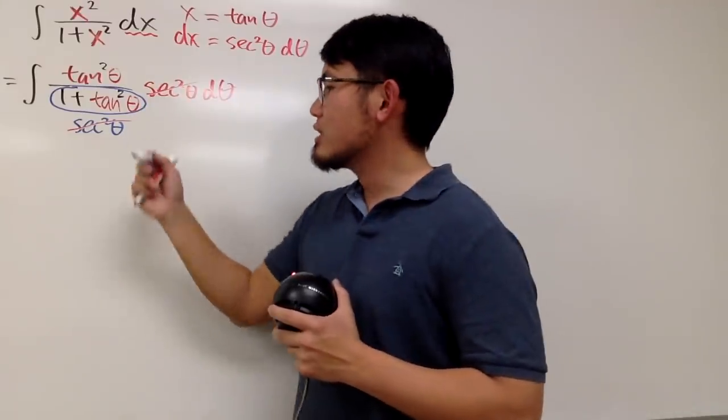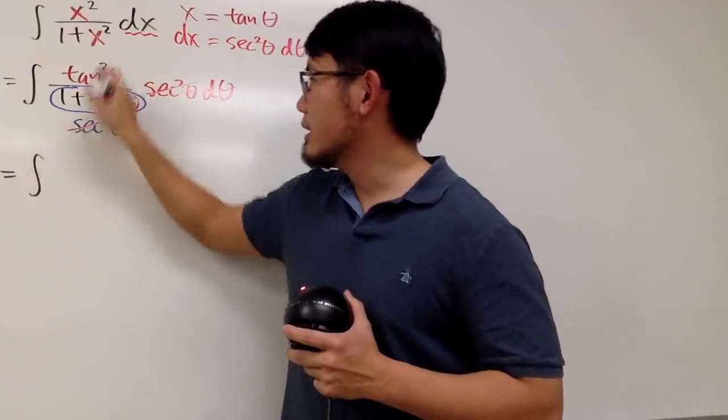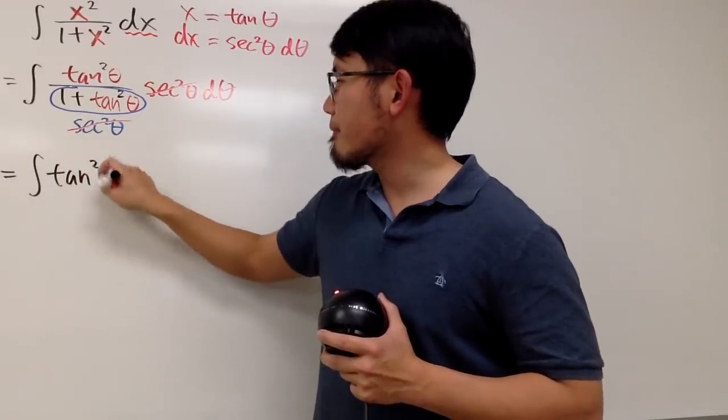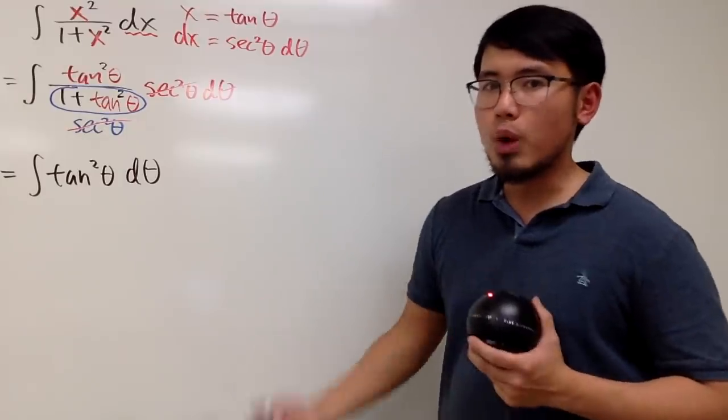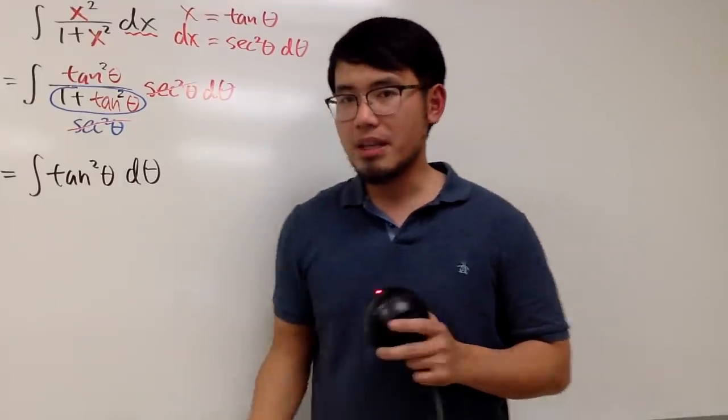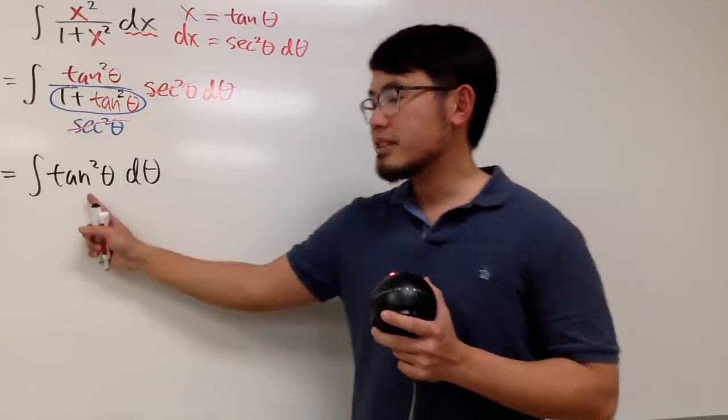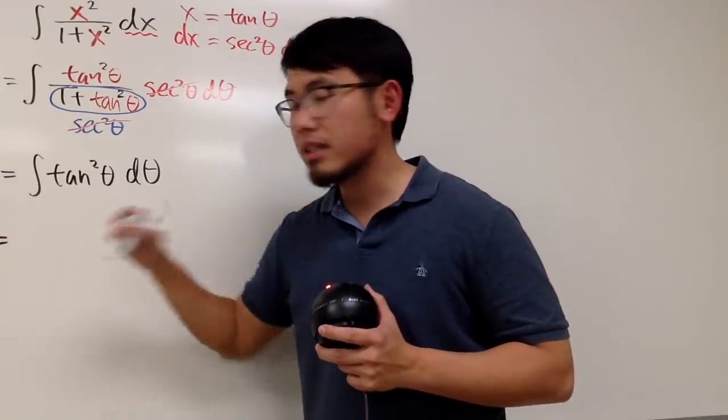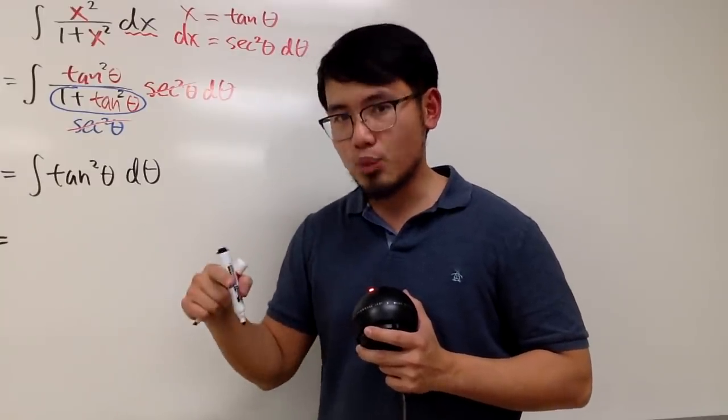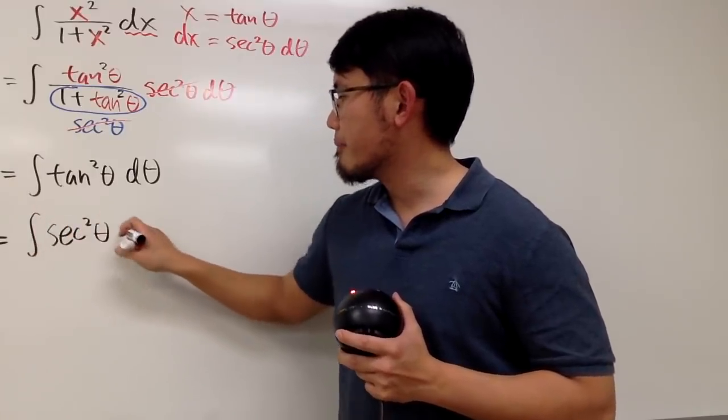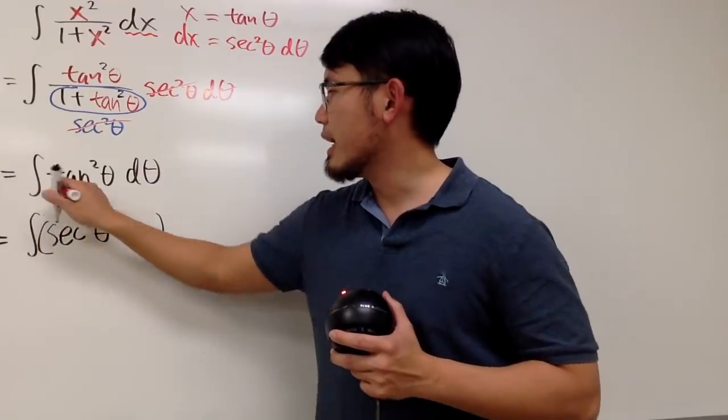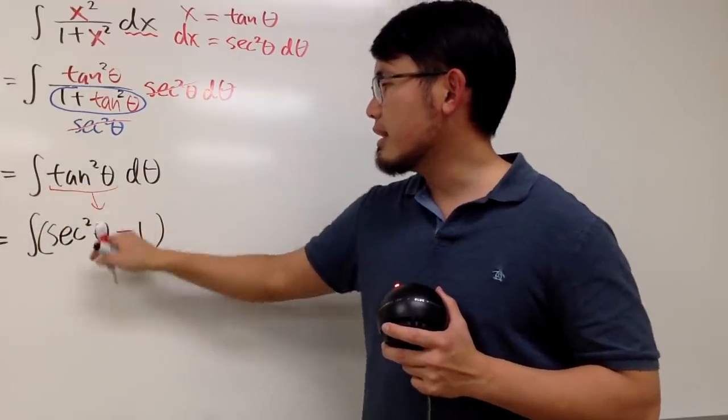Very nice. So now, we just have to integrate tangent squared theta. Well, do we recognize the derivative of what would give you tangent squared? Not so much. But we do know that tangent squared theta is the same as secant squared theta minus 1. So let's write that as the integral of secant squared theta minus 1. Again, this right here is just by the identity.